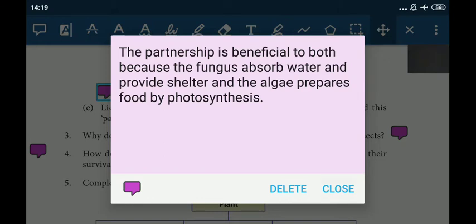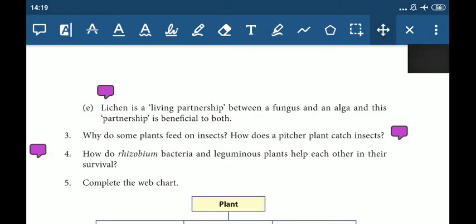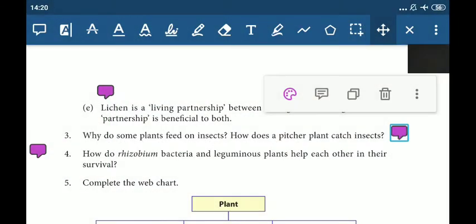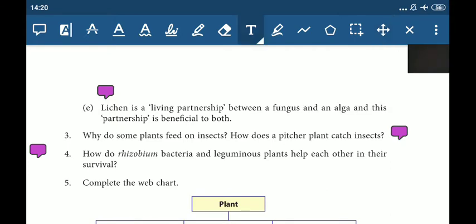Now the next question: why do some plants feed on insects and how does pitcher plant catch insects? Very simple. Some plants feed on insects for their nitrogen requirement. The leaf of the pitcher plant gets modified to form a pitcher with a lid. The pitcher is lined with downward-pointing hairs. When an insect enters, it cannot climb back out against the hair and ultimately falls to the bottom of the leaf and gets digested by the juices present there.